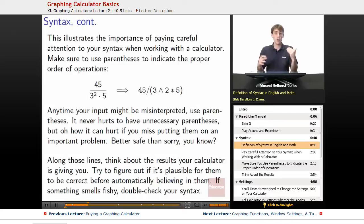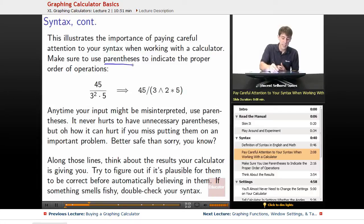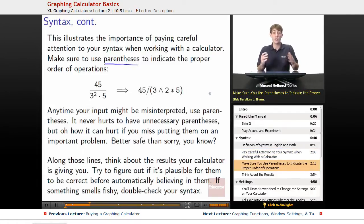This illustrates just how important it is to really think about the syntax we're using with the calculator. Make sure to use parentheses to indicate the proper order of operations. So if we want to have 45 divided by 3 squared times 5, what we do is we'll say 45 divided by, and then we'll put quantity 3 squared times 5. That way it knows that it's being divided by the whole thing of 3 squared times 5.